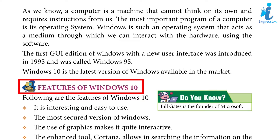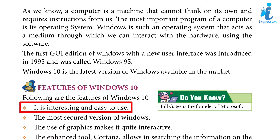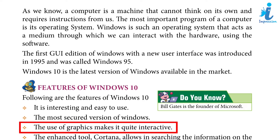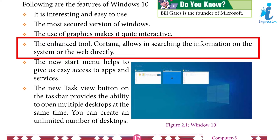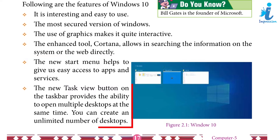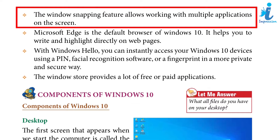Features of Windows 10: It is interesting and easy to use. It is the most secure version of Windows. The use of graphics makes it quite interactive. The enhanced tool allows searching for information on the system or the web directly. The new start menu helps give us easy access to apps and services. The new task view button on the taskbar provides the ability to open multiple desktops at the same time — you can create an unlimited number of desktops.